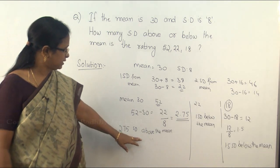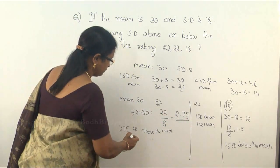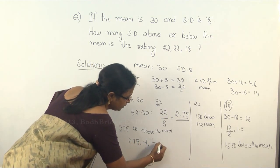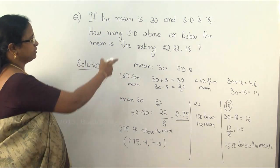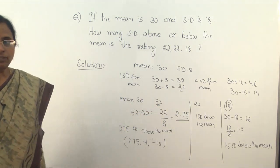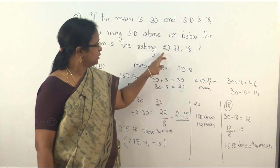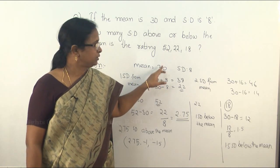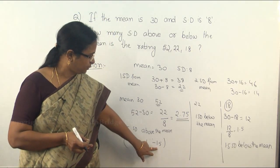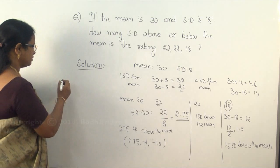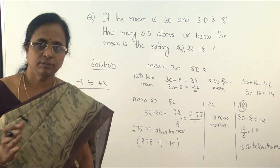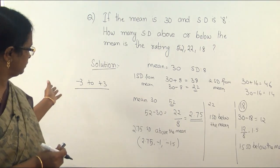To summarize: 52 is 2.75 standard deviations above the mean, and values below the mean can be represented as negative. So 22 is minus 1 and 18 is minus 1.5. If the value were exactly 30, the standard deviation would be 0. All three values — 2.75, minus 1, minus 1.5 — fall within the range of minus 3 to plus 3 standard deviations from the mean, which is the expected range.